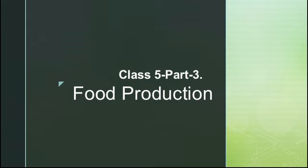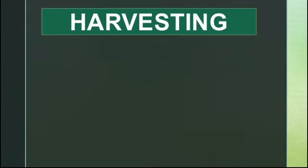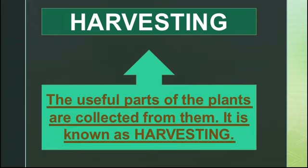Today we will learn about harvesting and where the food is harvested. Once the plants reach a certain stage of growth, some nutrient-rich materials may be added to the soil to help the plants grow. Fully grown plants give rise to flowers and fruits. The useful parts of plants are collected from them, and that is known as harvesting.